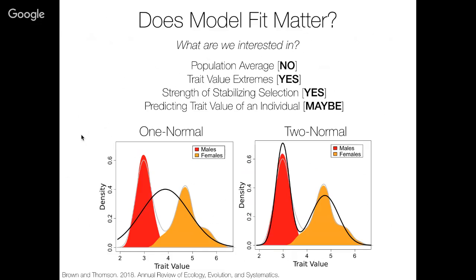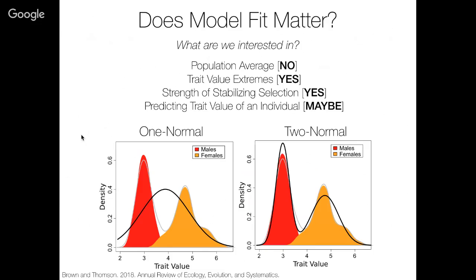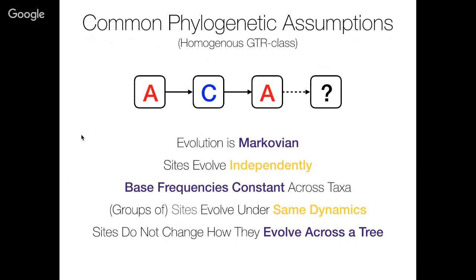All this to say, whether model fit actually matters for the thing we're interested in depends a lot on the question we have. When talking about predicting with the two normal model — in this case I'm talking about predicting for some individual from the population. If we were to randomly draw an individual and didn't know what sex it might be, what's the potential trait going to be? If we knew the sex and had separate normal models fit for each sex, we obviously do a lot better in the two normal case.